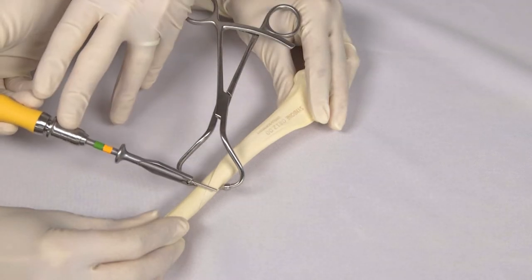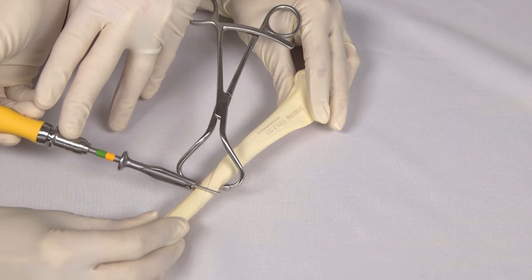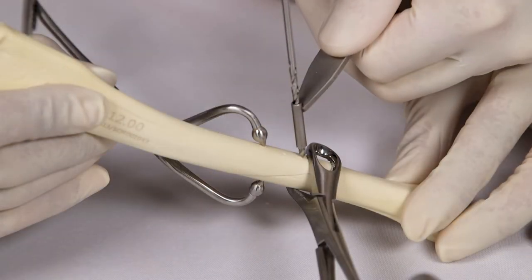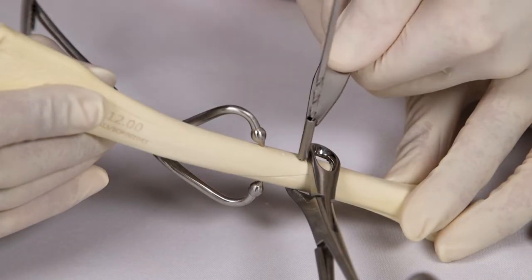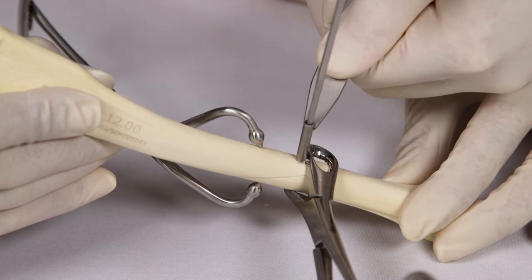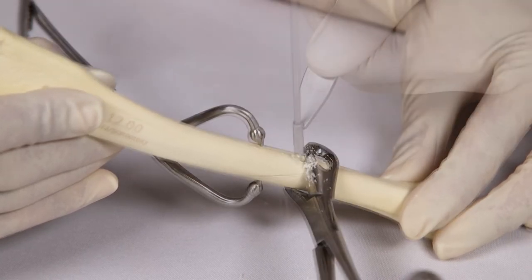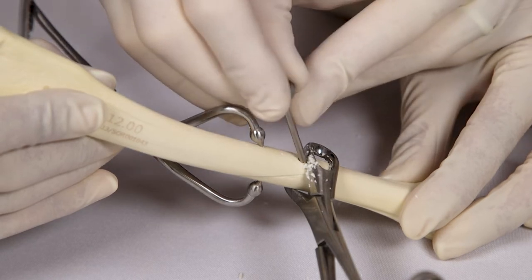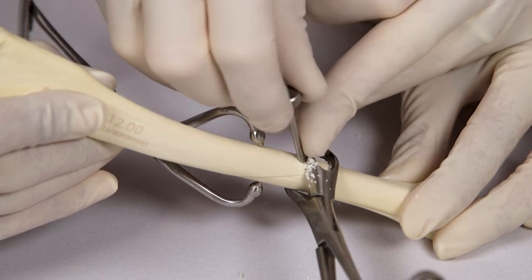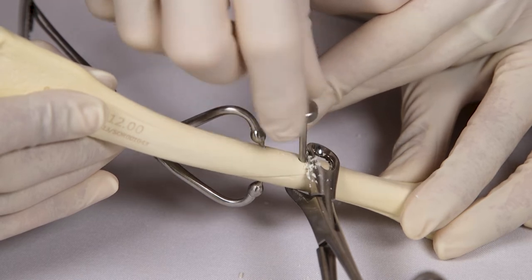Each lag screw should be placed perpendicular to the fracture. The near cortex is drilled using the clearance drill, which has the same outer diameter as the screws to be used. The insert sleeve is then placed into the hole and the far cortex is drilled with the pilot drill.